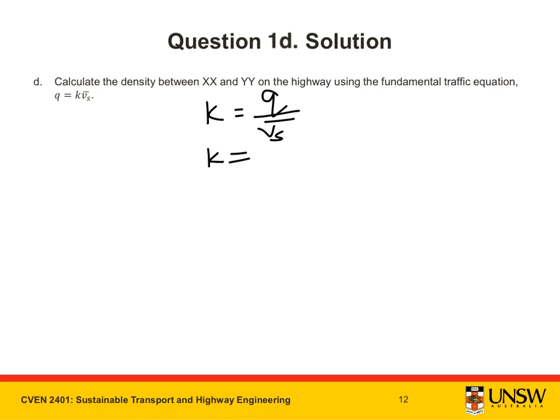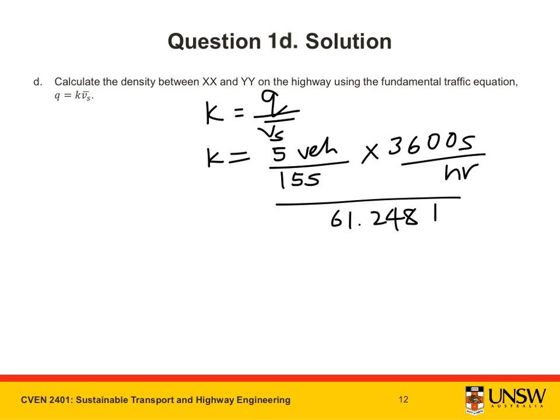K is equal to Q, which is 5 vehicles per 15 seconds, converted into vehicles per hour, divided by the space mean speed, which we calculated previously to be 61.248 km per hour. This gives us a density of 19.592 vehicles per km.